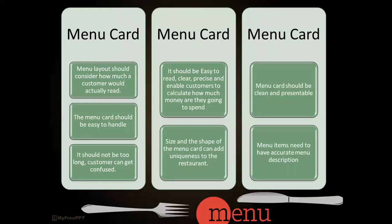When planning a menu card, two things are to be kept in mind. The menu layout should consider how much a customer would actually be able to read — too much reading can confuse customers, so to-the-point information must be mentioned on the menu card. The menu card should be easy to handle and not too long. It should be easy to read, clear, precise, and enable customers to calculate how much money they are going to spend. The size and shape of the menu card can add uniqueness to the restaurant. The menu card should be clean and presentable, and menu items need to have accurate descriptions.